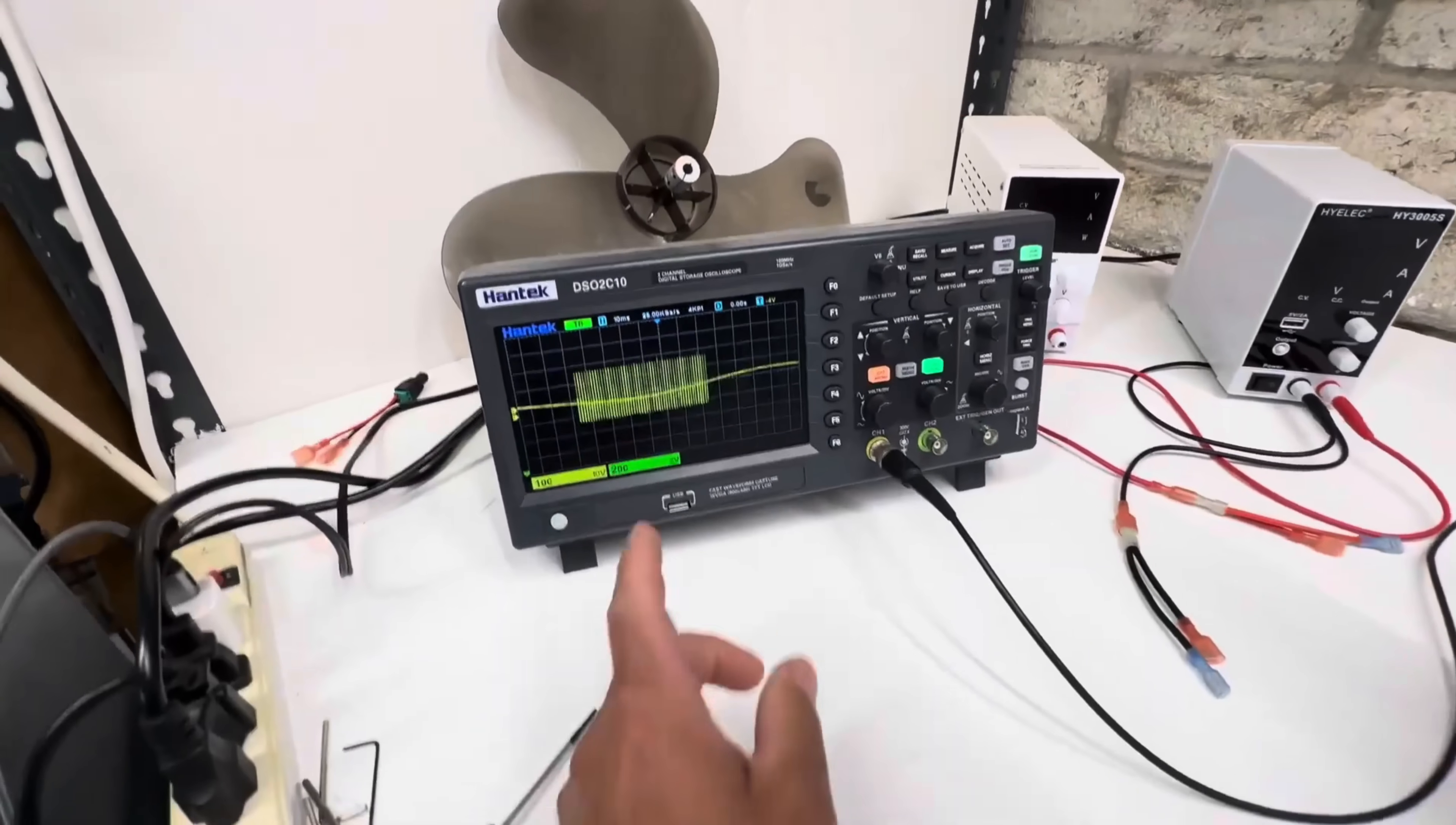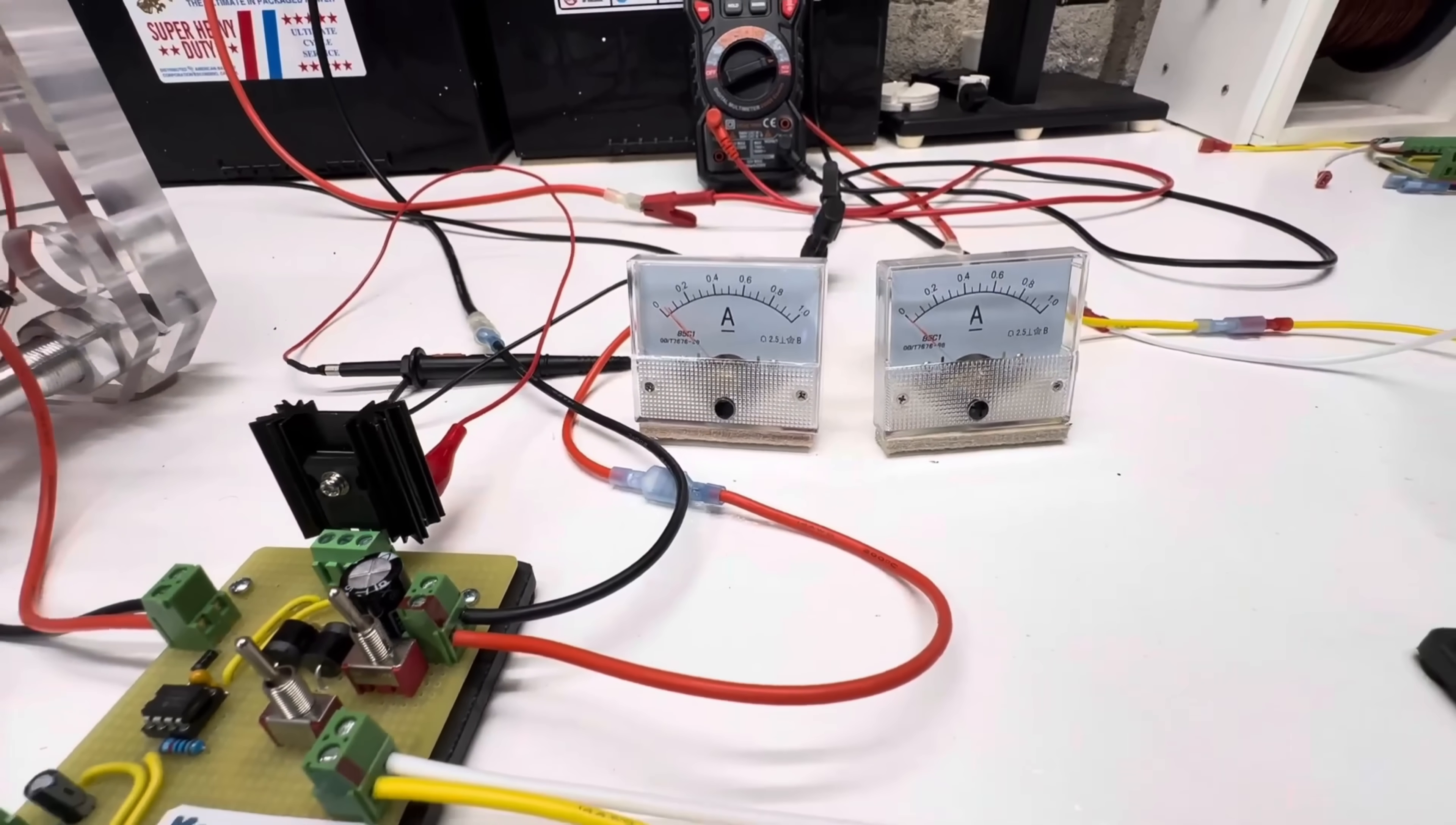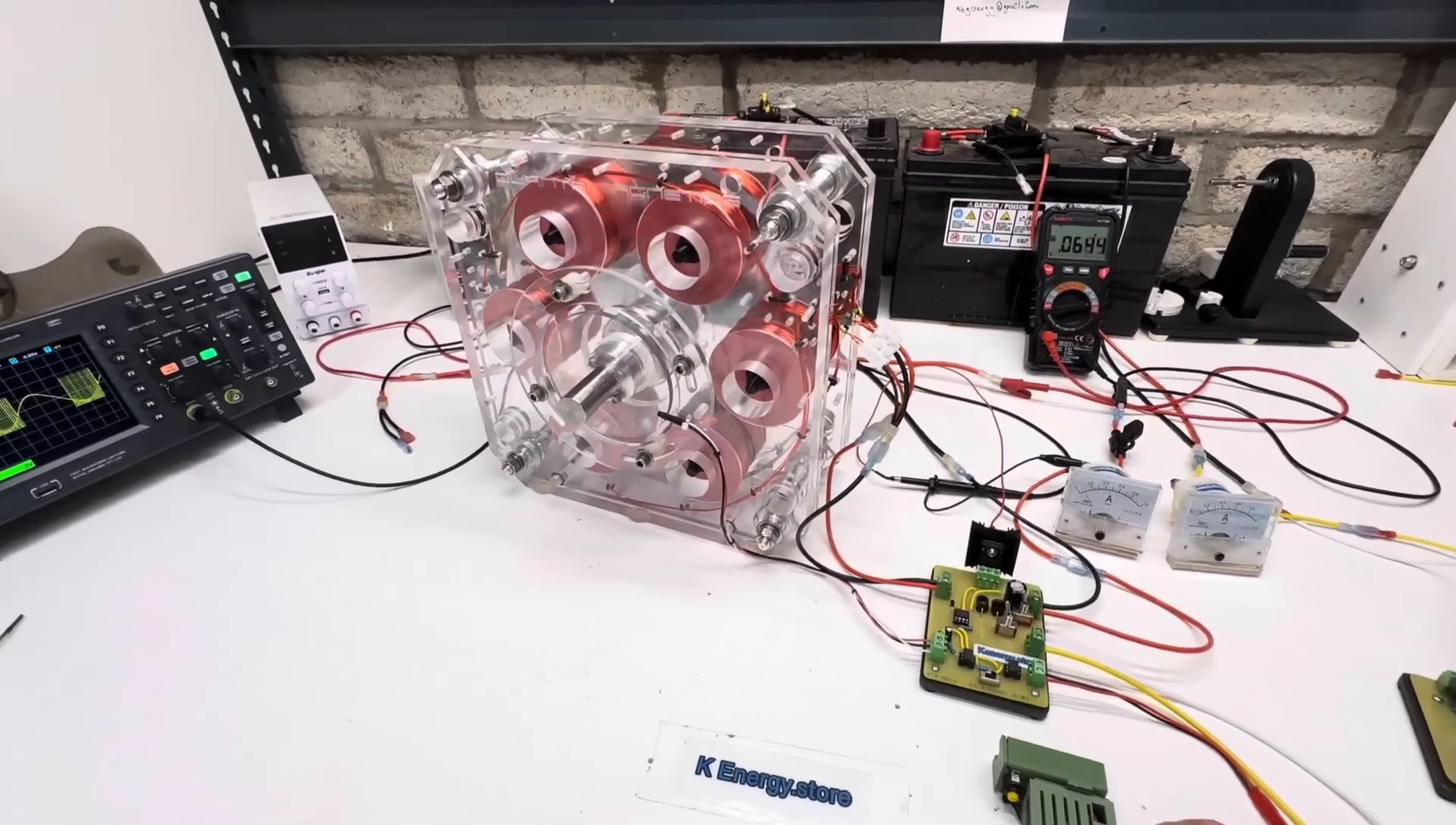Despite the mounting criticism, Quantum Magnetics remained undeterred, continuing to push forward with their ambitious plans. The company's marketing campaigns grew increasingly bold, with claims that their generators could provide limitless emission-free power for a fraction of the cost of traditional energy sources. But then in early 2023, the unthinkable happened: Quantum Magnetics' founders and executives suddenly disappeared, and the company's operations ground to a halt. Customers who had purchased the generators were left without support or answers, and the fate of the technology remained shrouded in mystery.